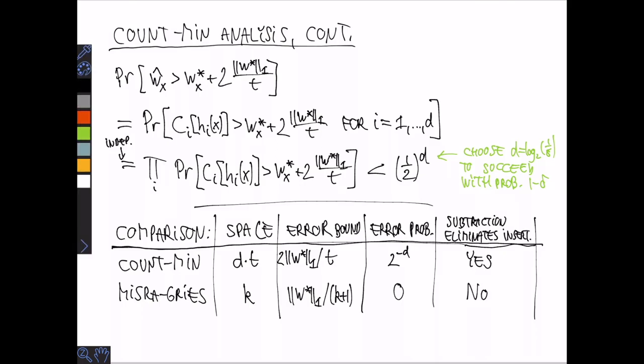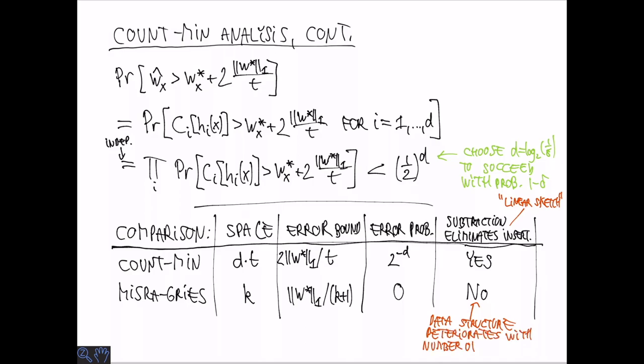But count-min has an advantage. It allows subtraction so you can basically eliminate the effect of an insertion. This is because it's a so-called linear sketch. Misra-Gries does support some kind of deletions but the data structure deteriorates with the number of subtractions. So it's not a good data structure if you're going to have a lot of subtractions.